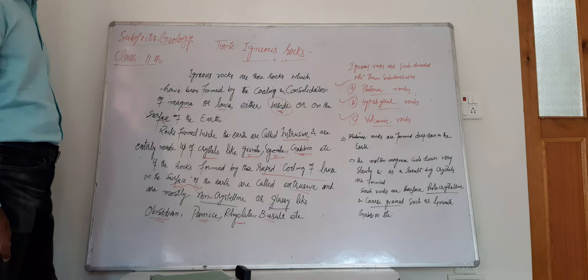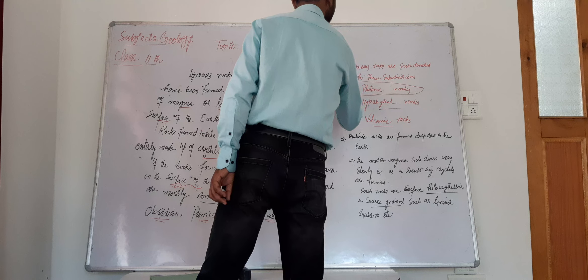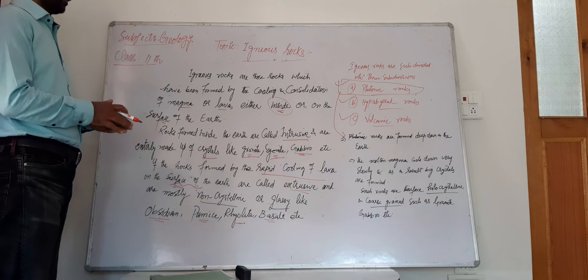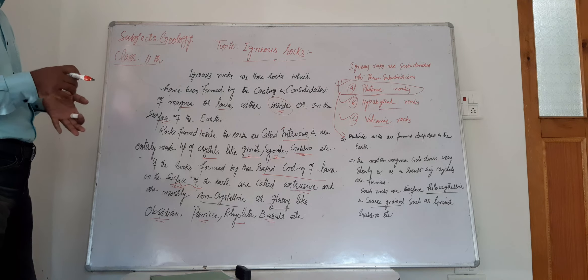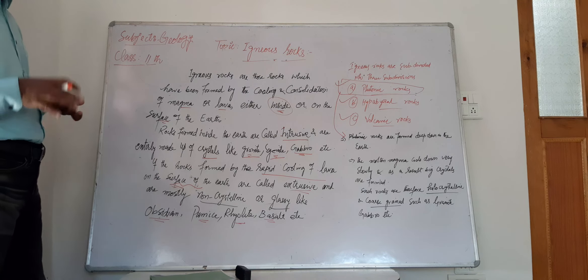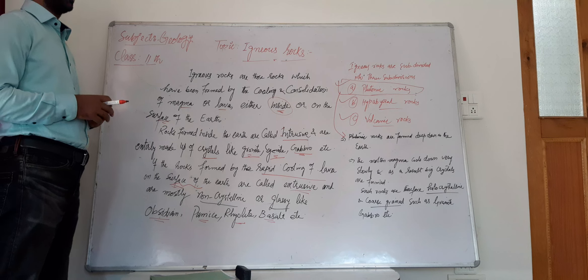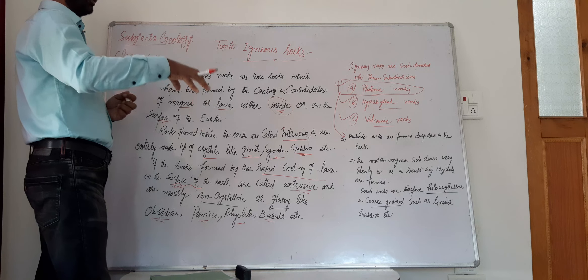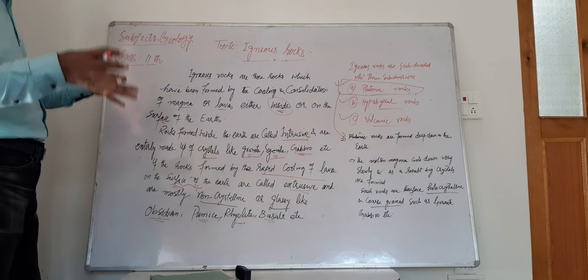Plutonic types of rocks are formed deep in the earth. The molten magma cools down very slowly because they are formed deep inside the earth where the surrounding temperature is also high. As a result, the molten magma cools down very slowly and big crystals are formed — the size of the crystals is very large.